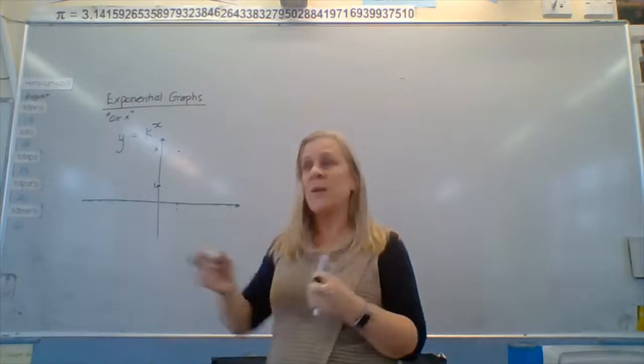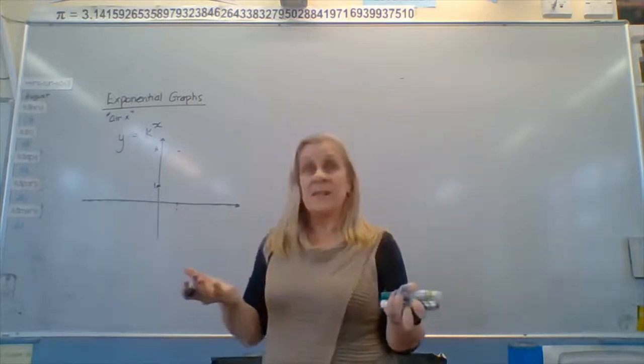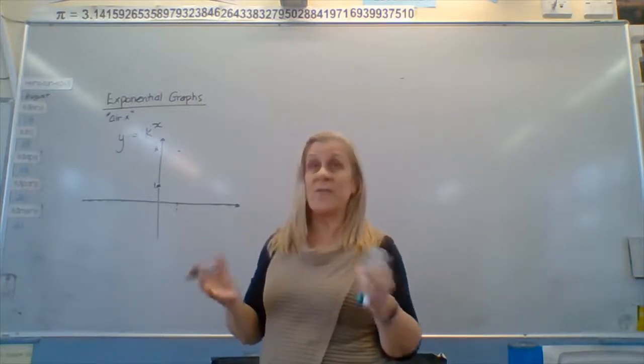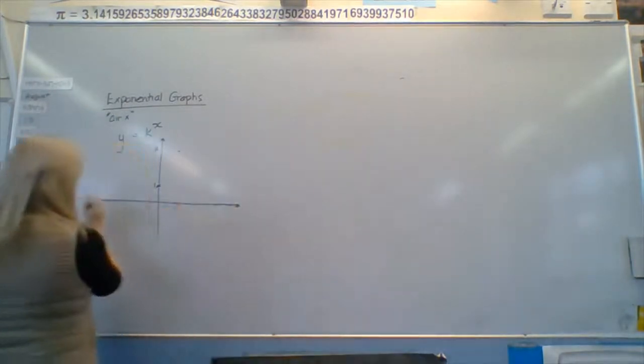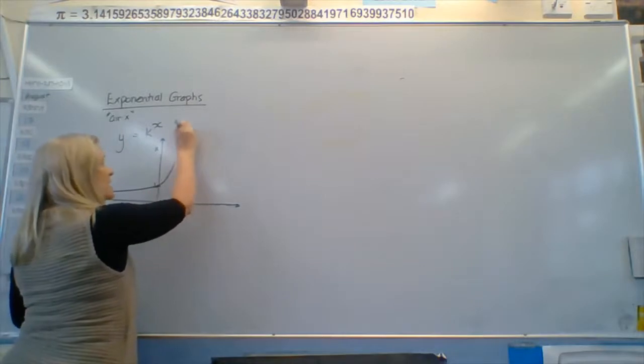So with those two points and the asymptote, that gives us enough information to draw the graph. That's all you actually have to be able to draw to get it right. So it looks like this.